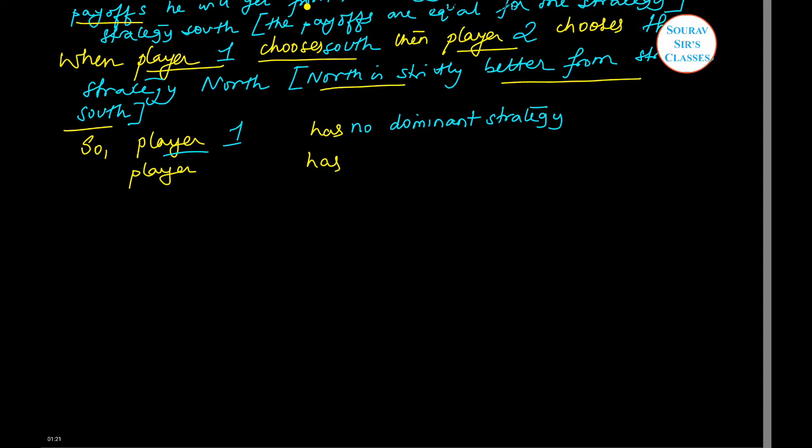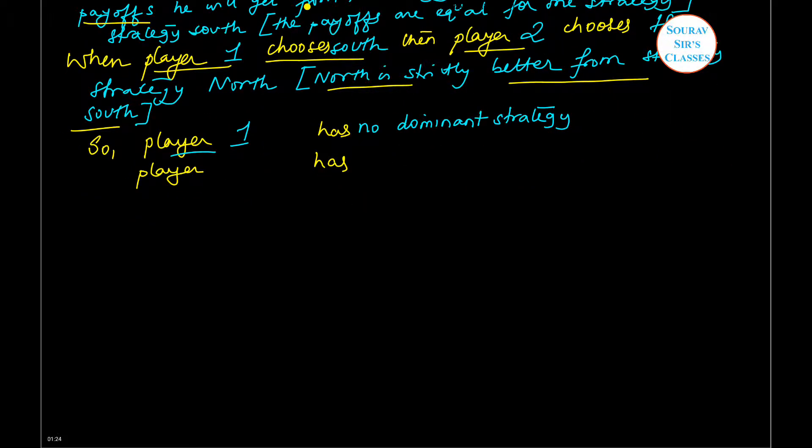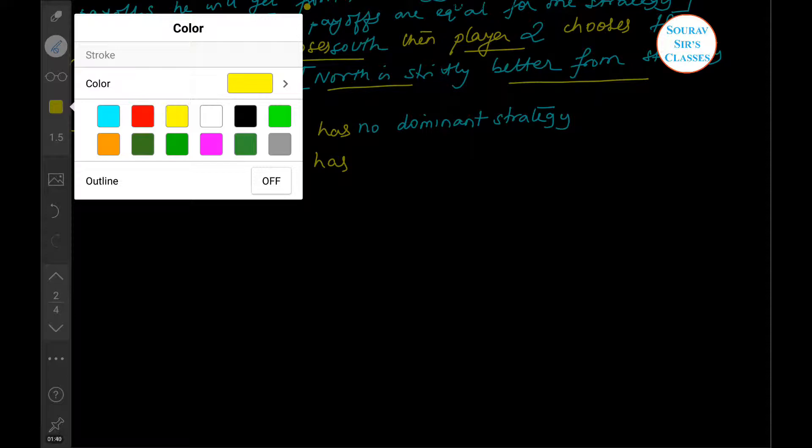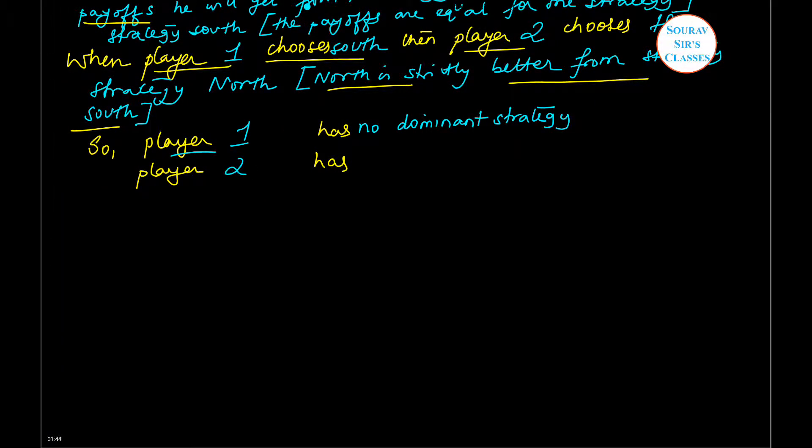Having said that, we come to the conclusion that player one has no dominating strategy, while for player two has a weakly dominating strategy, which is to go North.